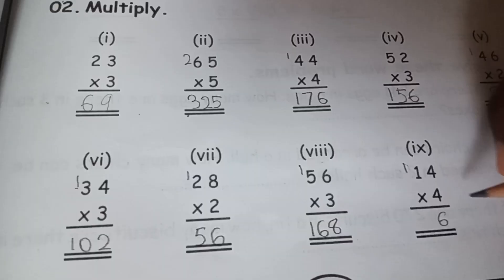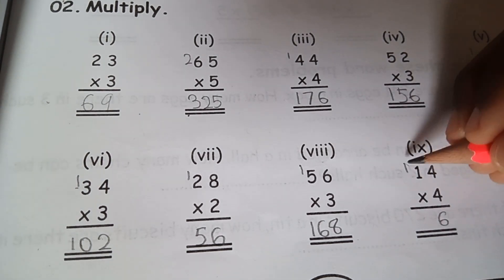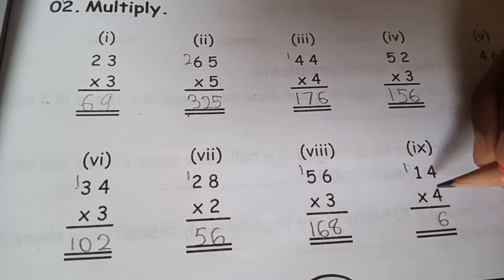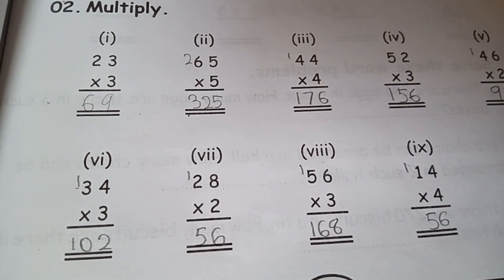Okay, again do this sum: 14 times 4. 4 times 4 is 16, and 1 goes over here. 4 times 1 is 4, and 4 plus 1 is 5, so the answer will be 56.